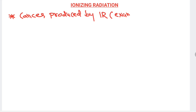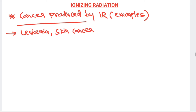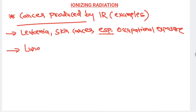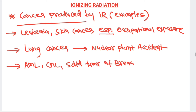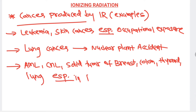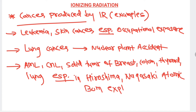Ionizing radiation can lead to cancer development. Commonly it causes leukemia and skin cancer, especially following occupational exposure. Lung cancer can occur following nuclear plant accidents. Ionizing radiation also causes acute myeloid leukemia, chronic myeloid leukemia, and solid tumors of organs such as breast, colon, thyroid, and lung. A well-known example is the Hiroshima and Nagasaki atomic bomb explosion survivors, who developed such cancers.